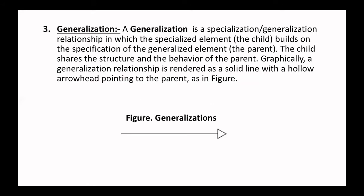Moving to the third: generalization. A generalization is a specialization/generalization relationship in which objects of the specialized element are substitutable for objects of the generalized element. In this way, the child shares the structure and behavior of the parent. Graphically, a generalization relationship is represented as a solid line with a hollow arrowhead pointing to the parent — the bottom shows the child and the head shows the parent.